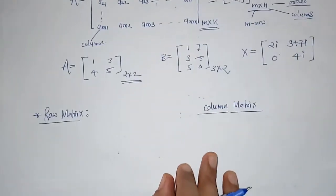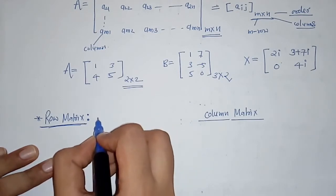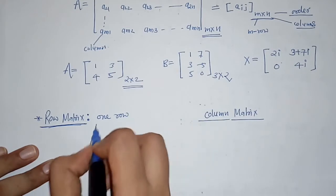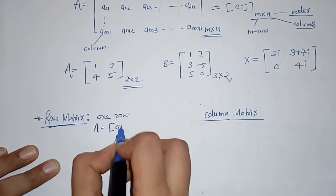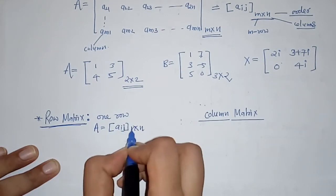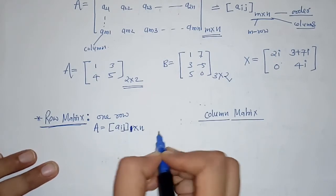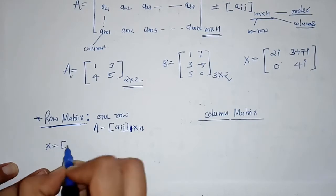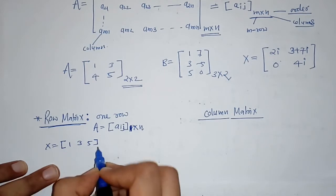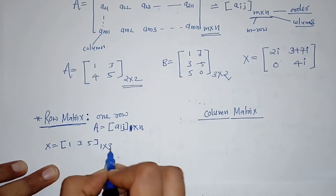Now next we have types of matrix. First we will see what is a row matrix. A row matrix is a matrix having only one row. In general, we write this matrix as having only one row, meaning its order is 1 by n, where 1 represents the number of rows and n is the number of columns.